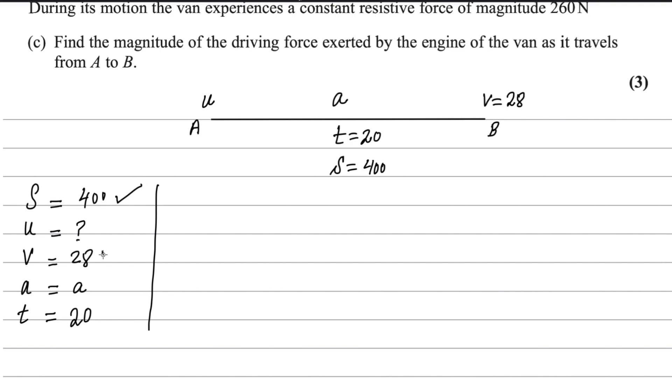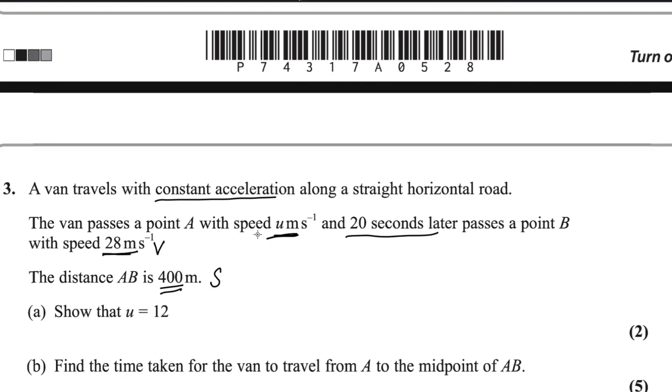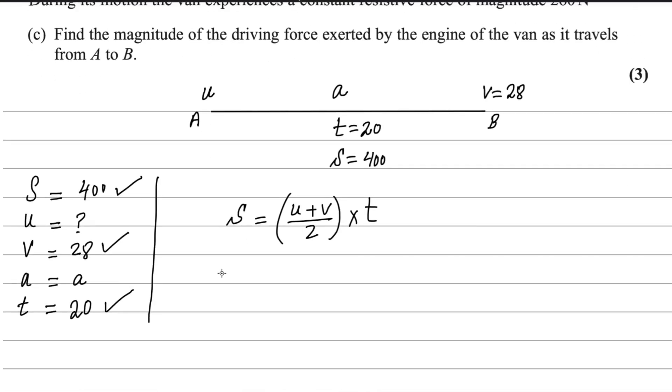If you remember the formula for distance, it equals average velocity multiply time. Average velocity is u plus v divided by 2 multiply time. You have to memorize this formula as well. Substitute the values to get u. We need to prove u equals 12. Here three things are known, so the fourth you can find easily. 400 equals u plus 28 divided by 2 multiplied by 20.